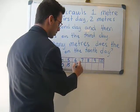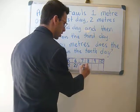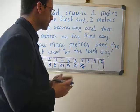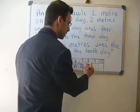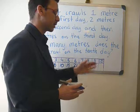Six plus four equals ten metres. Ten plus five equals fifteen metres. Fifteen plus six, twenty-one metres.